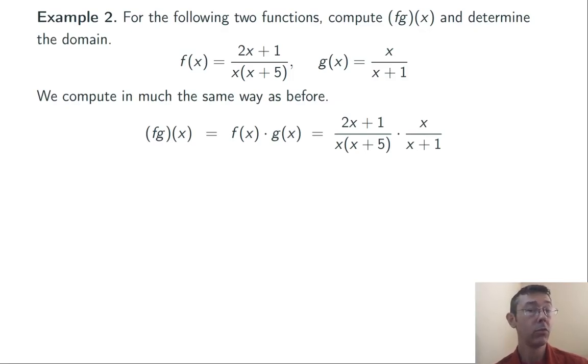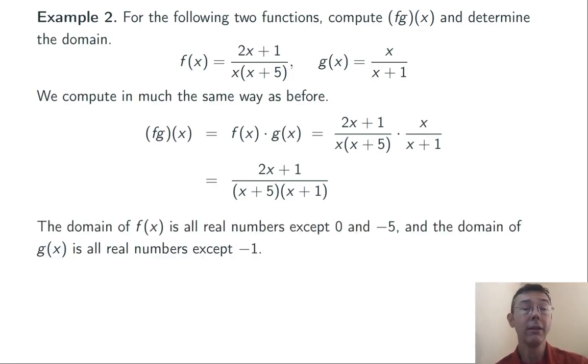Here I have an x in the numerator and an x in the denominator as factors, so those can cancel. I've got 2x plus 1 over x plus 5 times x plus 1. The domain of f is going to be all real numbers except 0 and negative 5. Those are the two numbers that will make the denominator of the formula for f of x equal to 0. Similarly, the domain of g of x is all real numbers except x equals negative 1. Negative 1 makes that denominator 0.